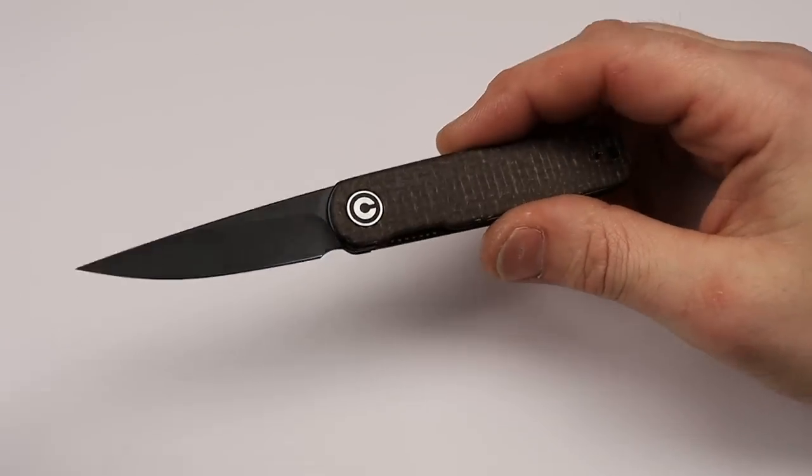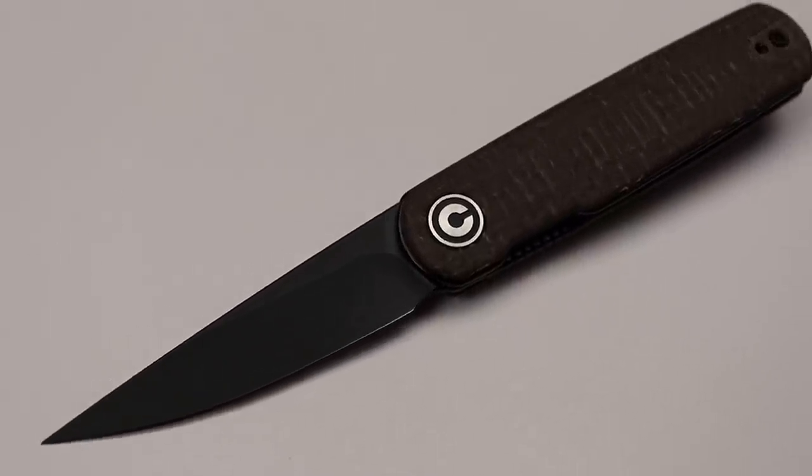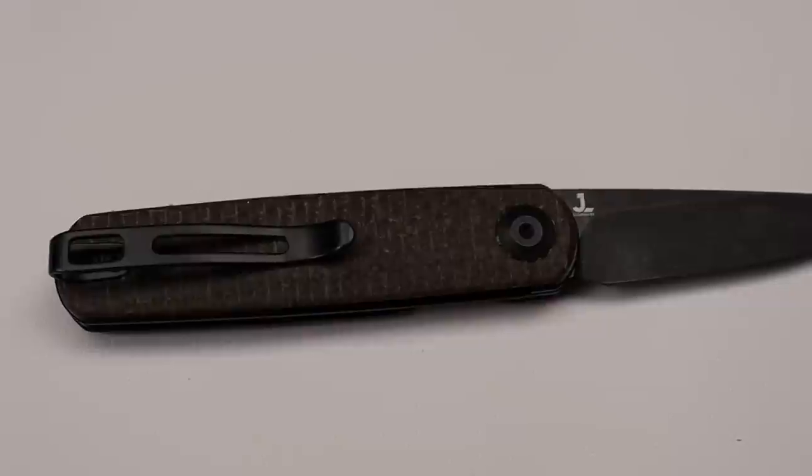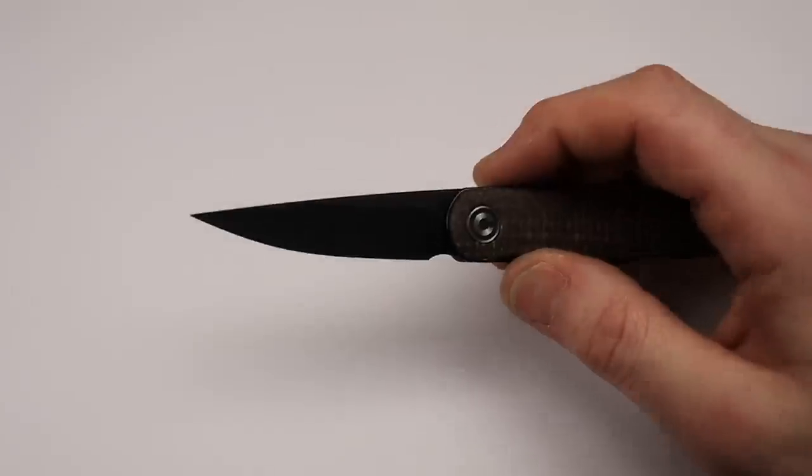Like the Civivi Lumi, I think, yeah, the Lumi in 14C28N, hollow ground, drop point blade, nice and thin geometry for such a small blade.